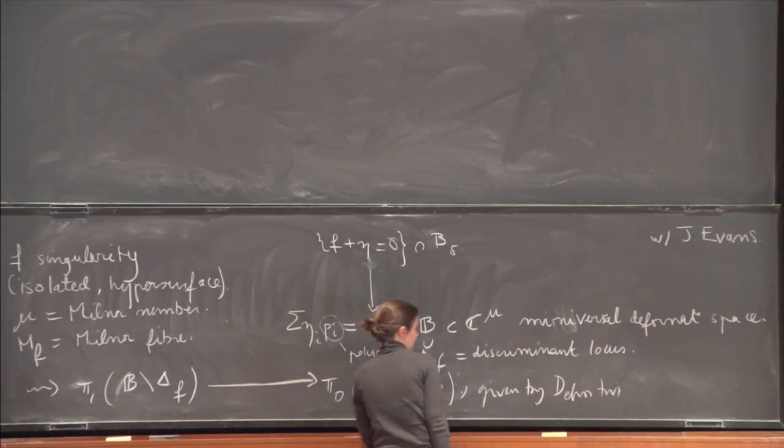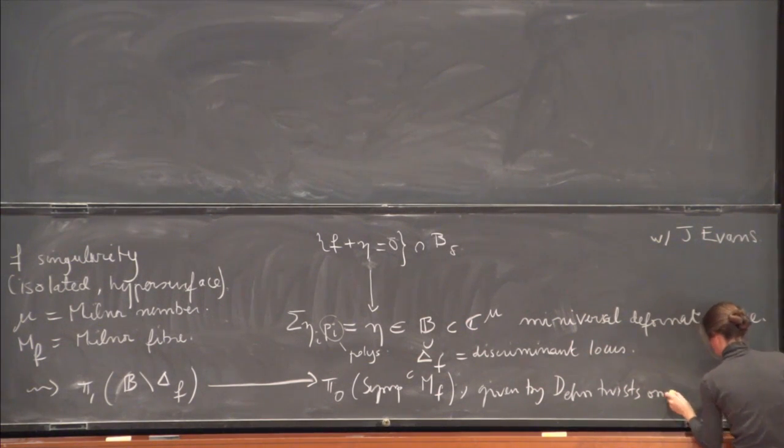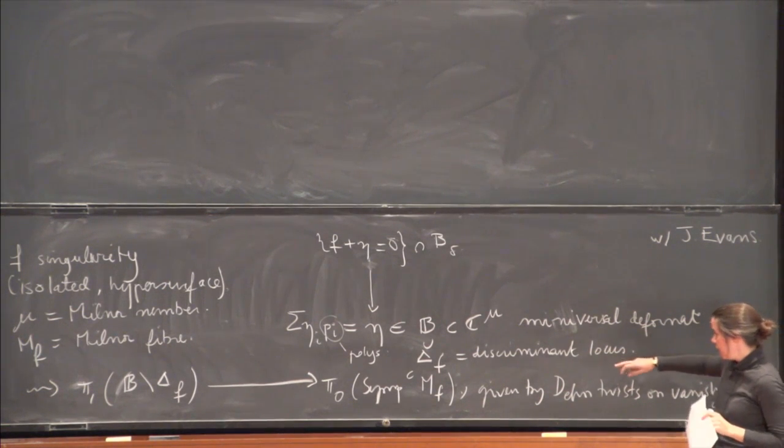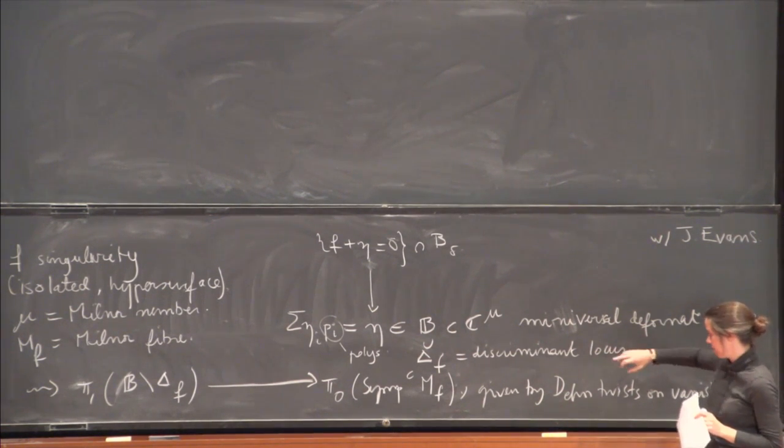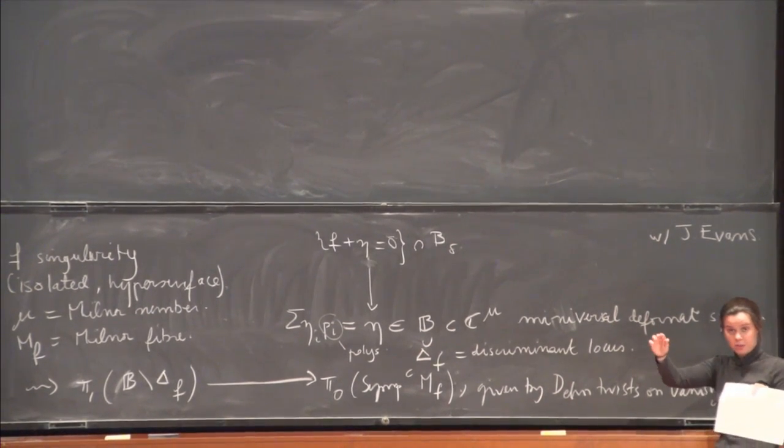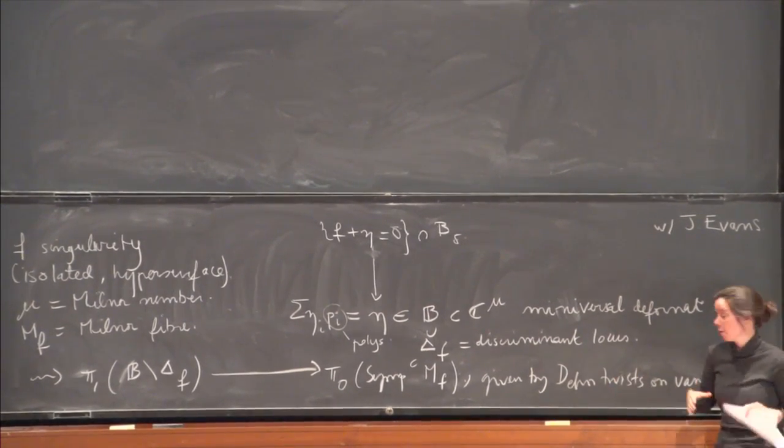To, by looking at the monodromy action on the smooth fiber, pi naught of the space of compactly supported symplectomorphisms of the Milner fiber. Whenever a fiber is smooth here, it's a copy of the Milner fiber. And this action is given by a vanishing cycle, by Dehn twists in vanishing cycles.